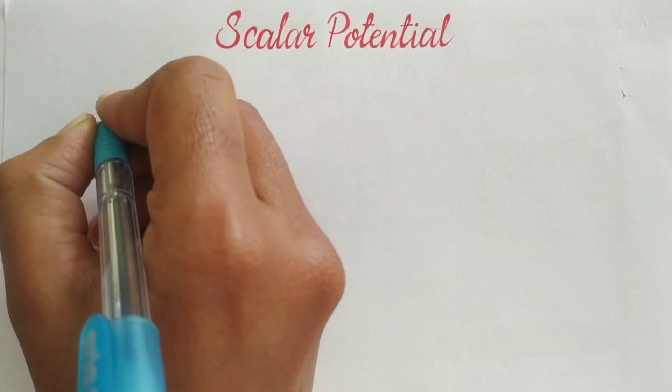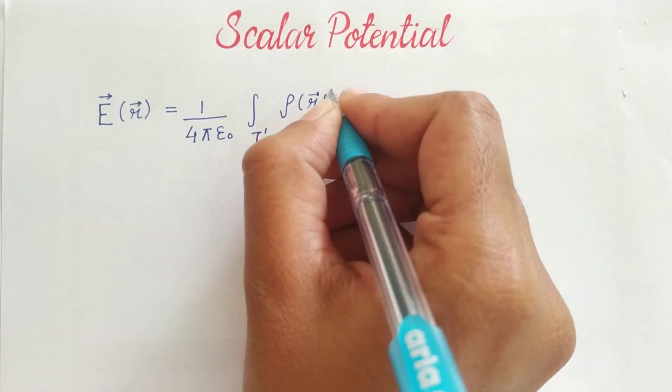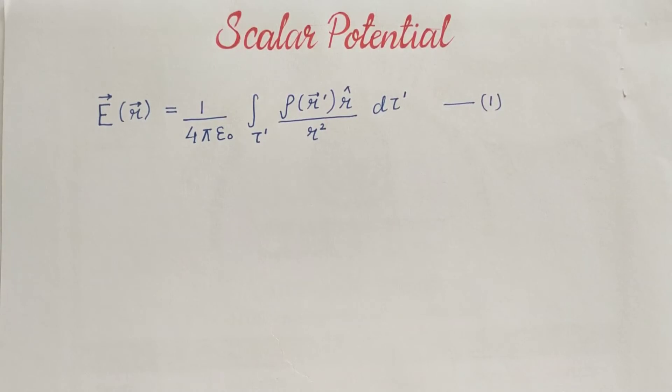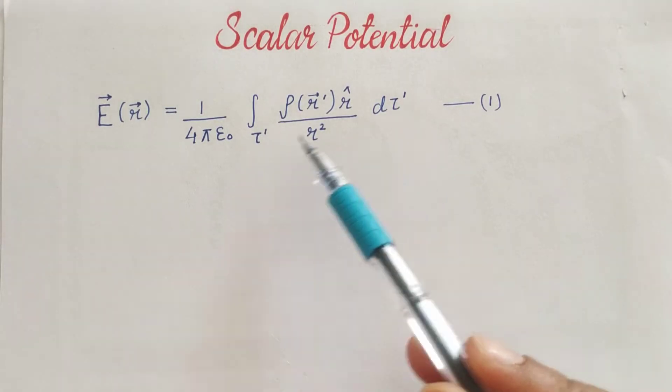Now let's write electric field at point R. As you know that we are dealing with volume charge thus we had taken rho, d tau dash and tau dash as prime coordinates.